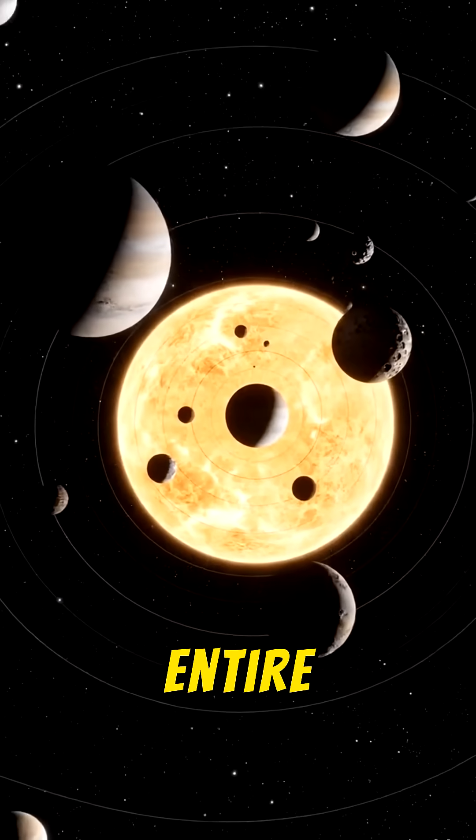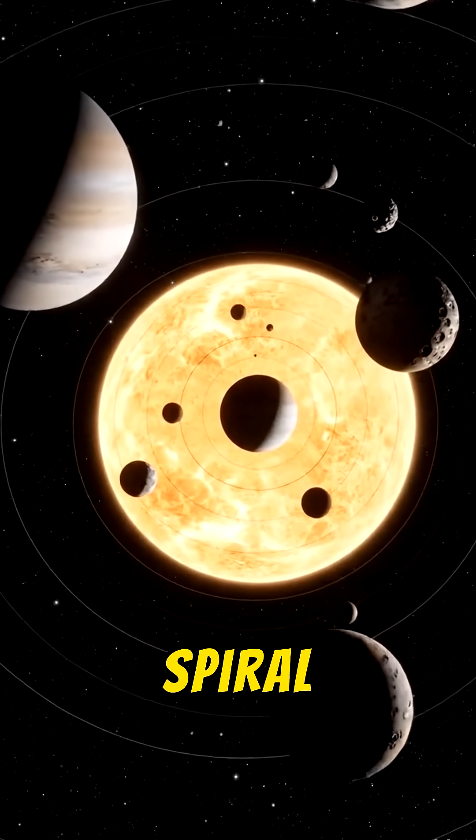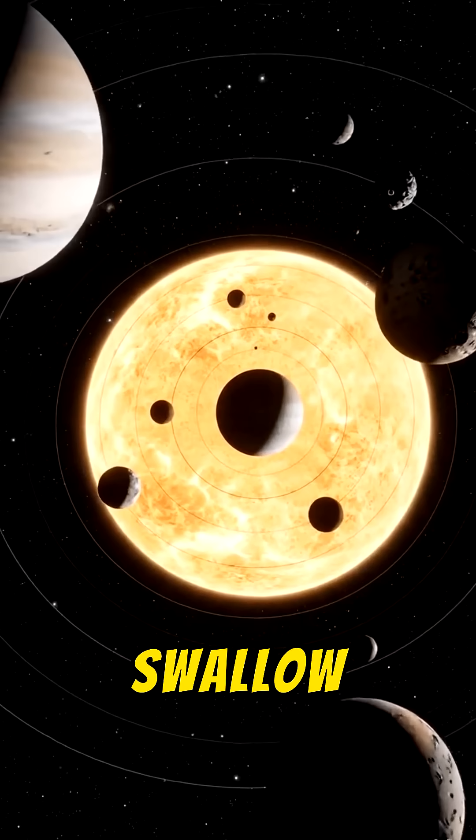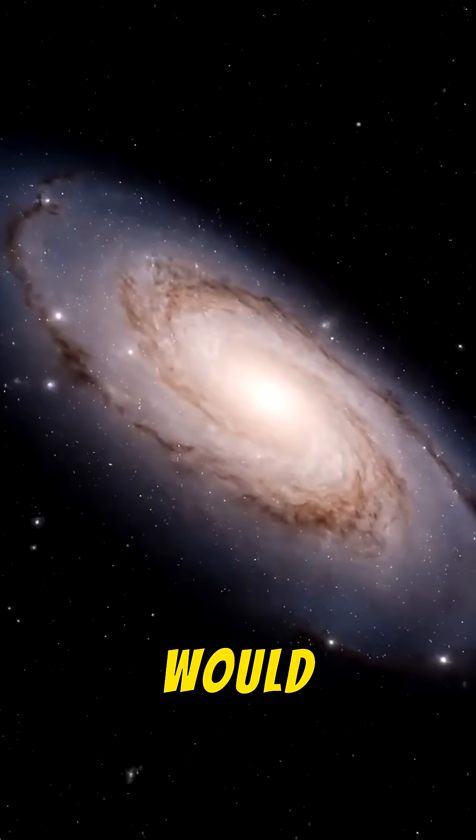Over time, entire solar systems would collapse. Planets would spiral inward, stars would swallow their worlds, and galaxies would lose their structure.